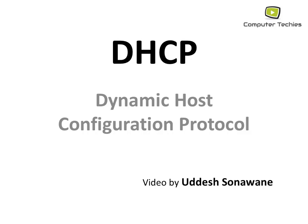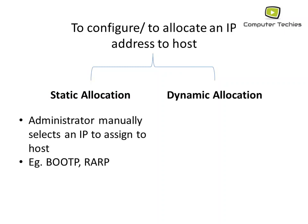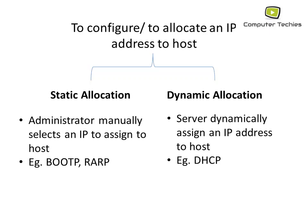Let's start with the name. Host and configuration — it's clear that we are configuring the host. The allocation of an IP address divides into two parts: static allocation and dynamic allocation. In static allocation, the administrator manually selects an IP to assign to the host, e.g. BootP and RARP — two protocols used in early days. Nowadays we use DHCP, the Dynamic Host Configuration Protocol, where the server dynamically assigns an IP address to the host.